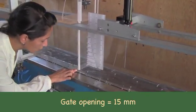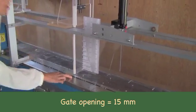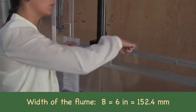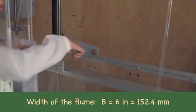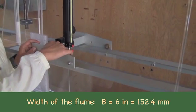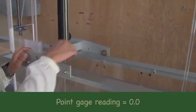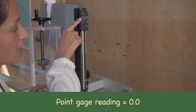The gate opening is 15 millimeters. The width of the flume is 6 inches wide, or 152.4 millimeters. Note that the point gauge is at 0.